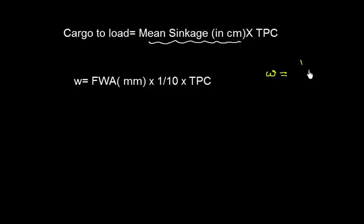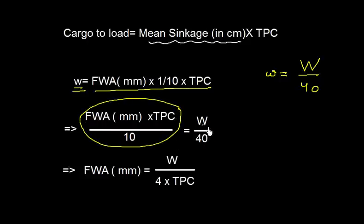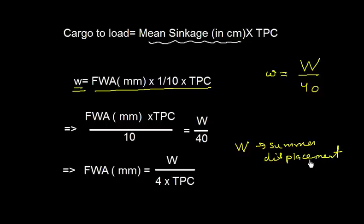We concluded that small W equals capital W divided by 40. Substituting, we get: Fresh Water Allowance × TPC / 10 = W / 40. Rearranging, the Fresh Water Allowance equals W divided by 4 into TPC, where W is the summer displacement — meaning the vessel is loaded to the summer load line in saltwater — and TPC is also for saltwater.